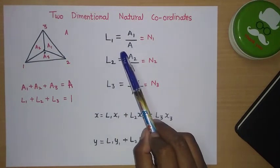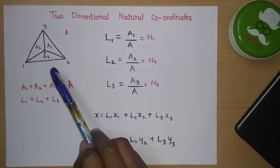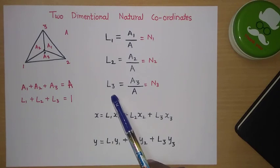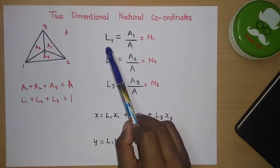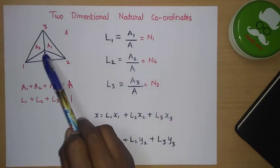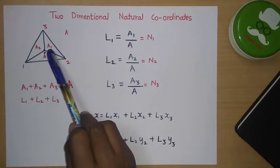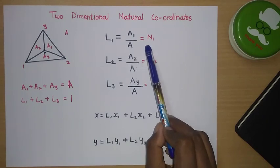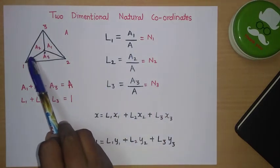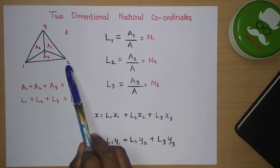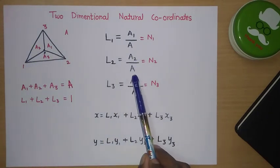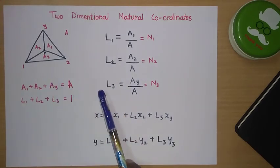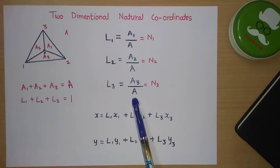For the triangular element, we define three natural coordinates: L1, L2, and L3. L1 is calculated as the area A1 opposite to node 1 divided by total area, so L1 = A1/A. L2 equals area A2 divided by total area, so L2 = A2/A. Similarly, L3 = A3/A.